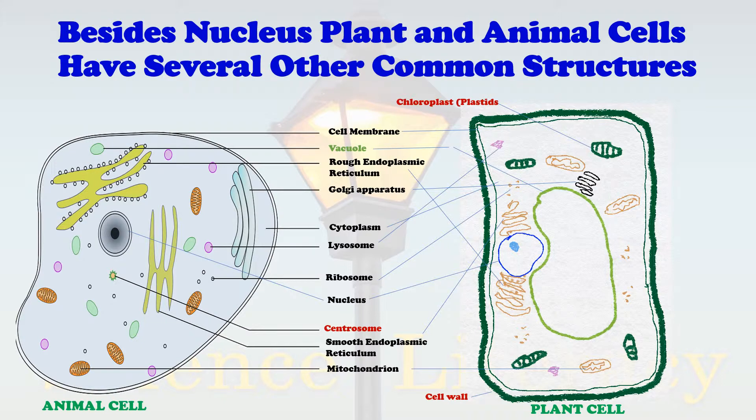Moving to animal-specific structures: animal cells have a centrosome, which is not present in plant cells.